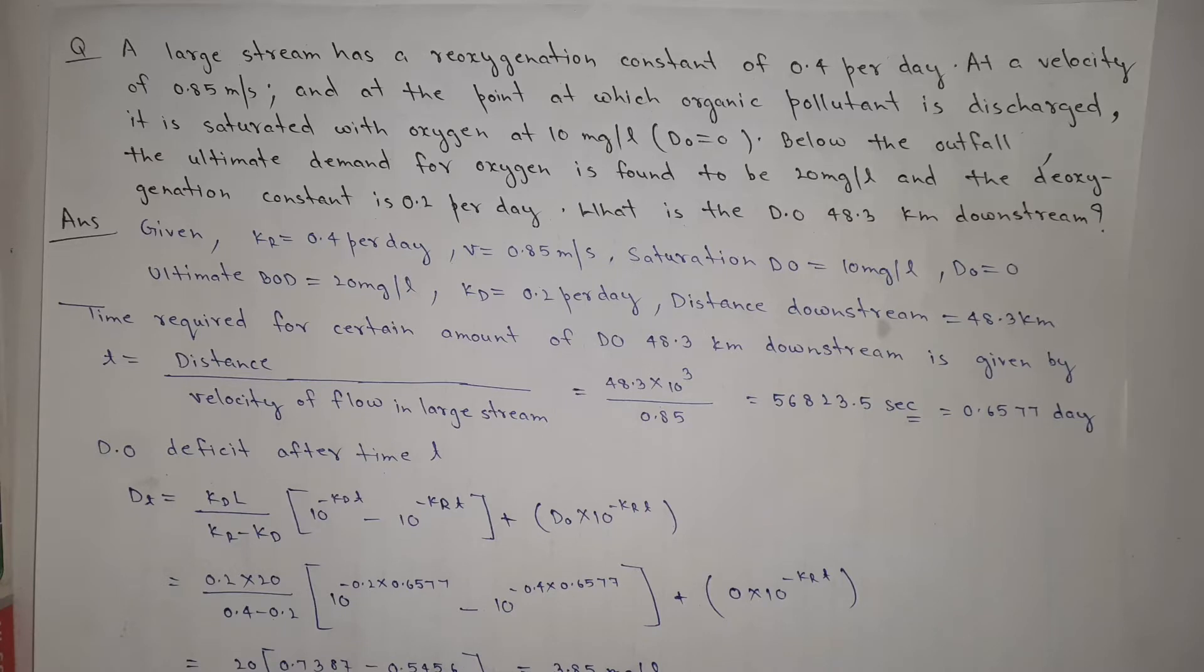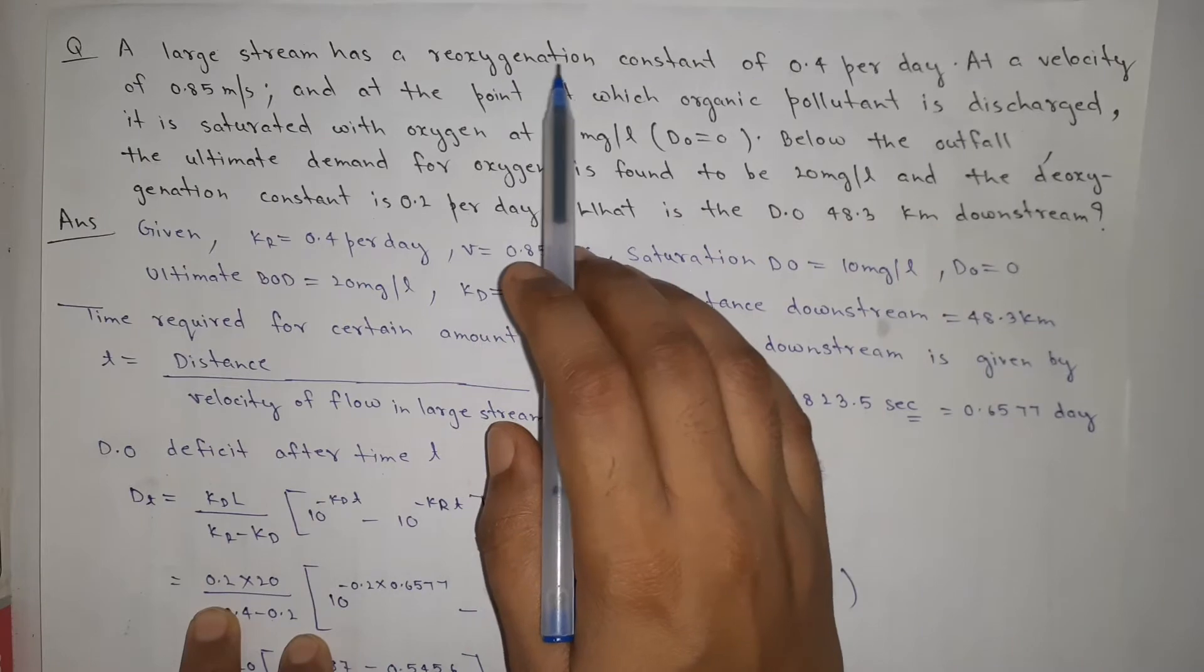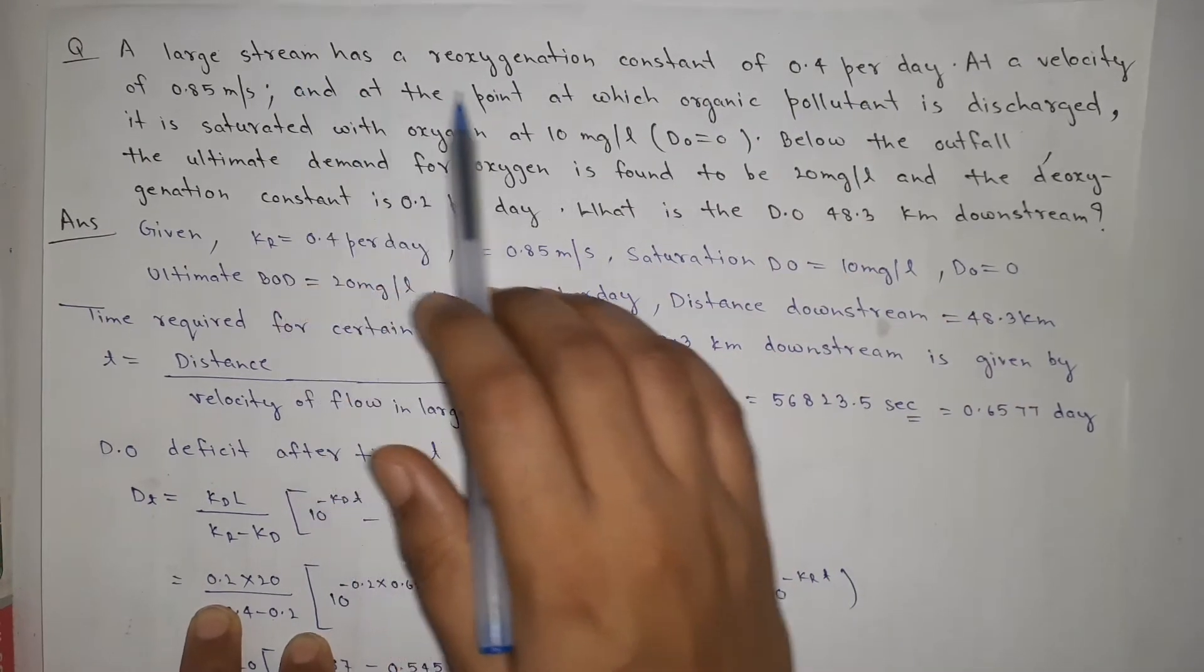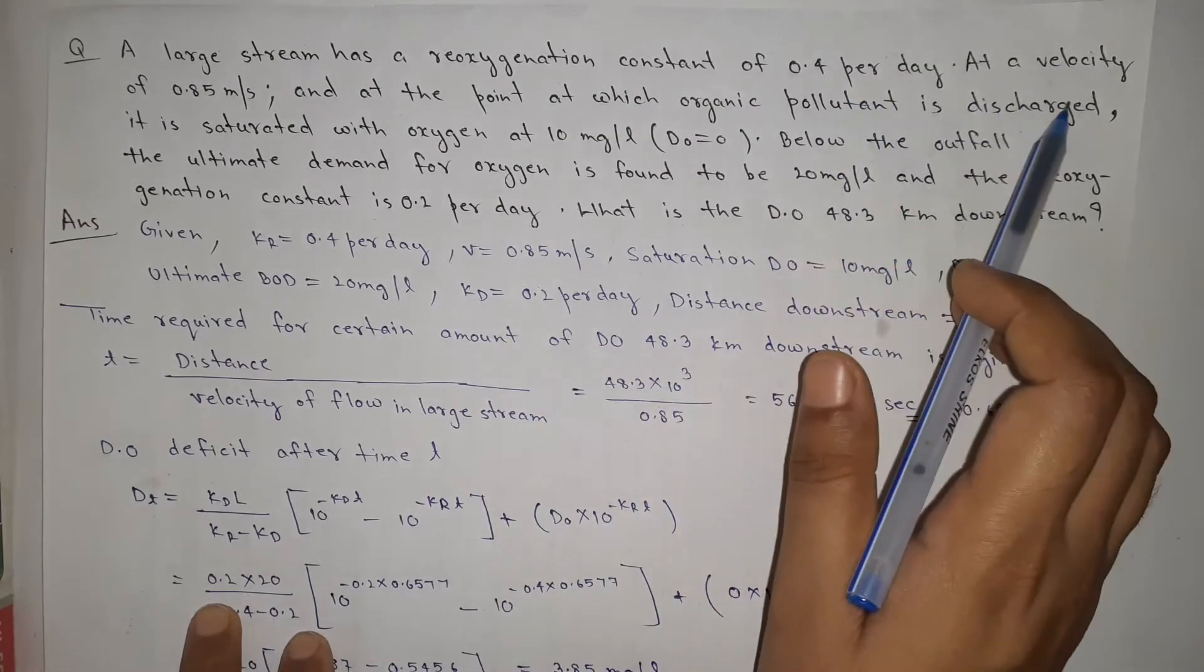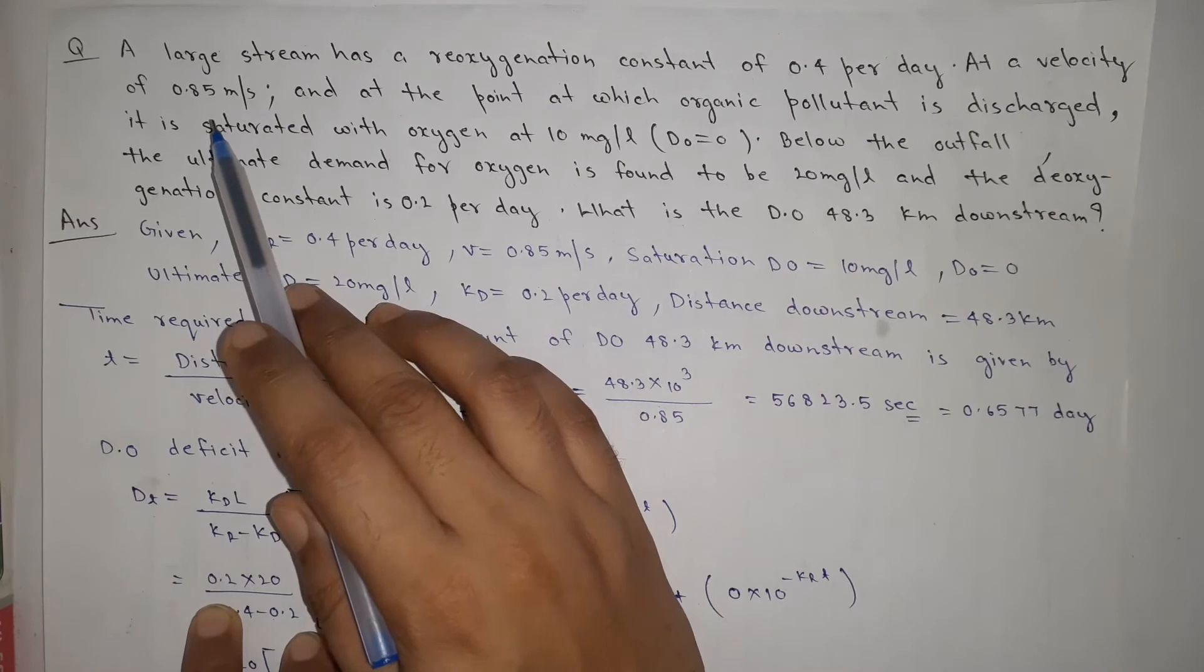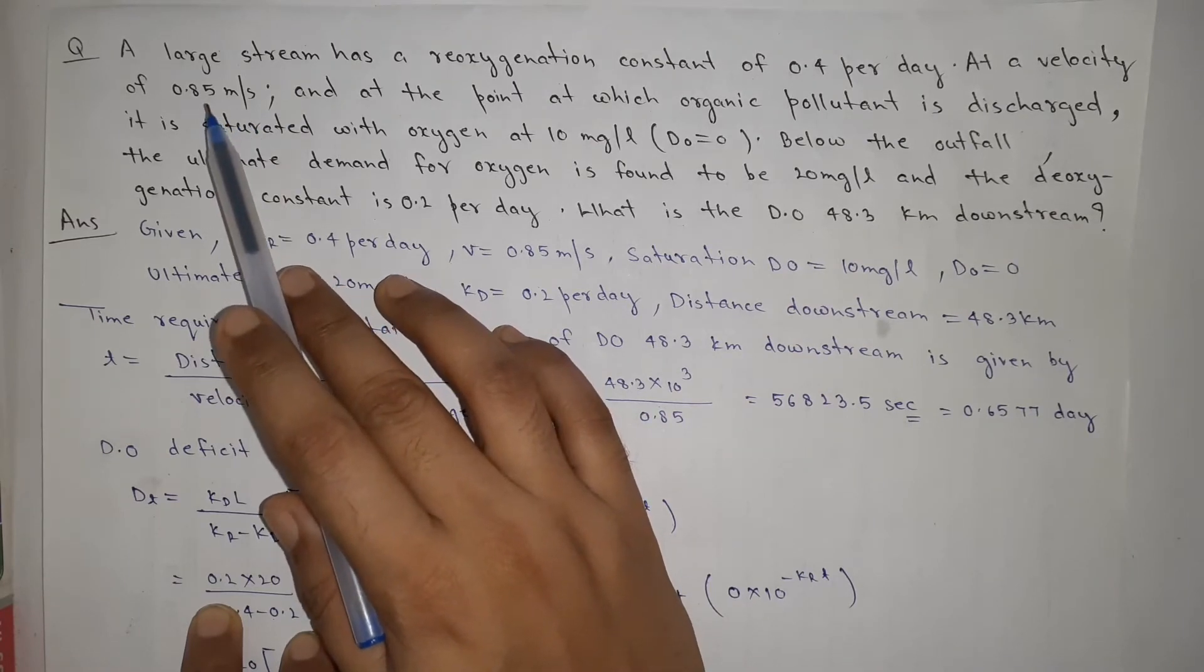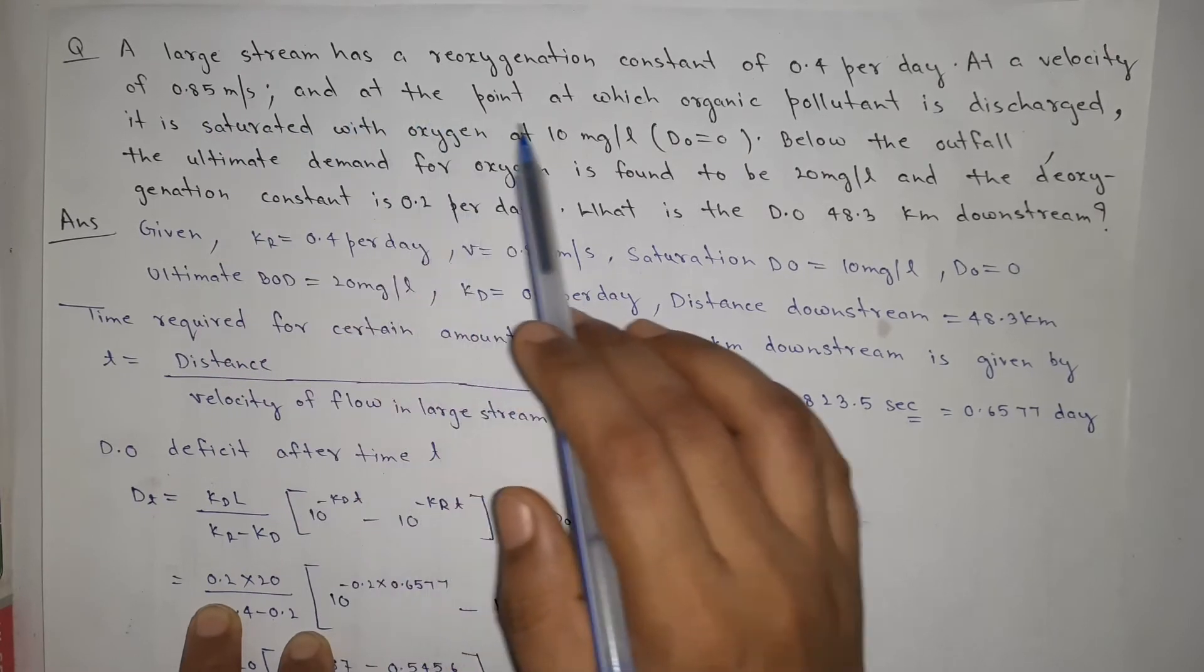Here our question is: a large stream has a reoxygenation constant of 0.4 per day at a velocity of 0.85 meter per second, and the flow velocity is 0.85 meter per second.